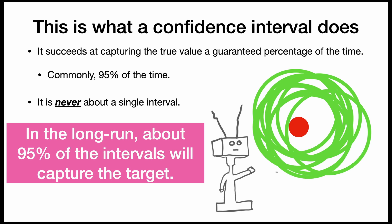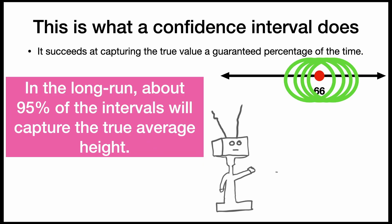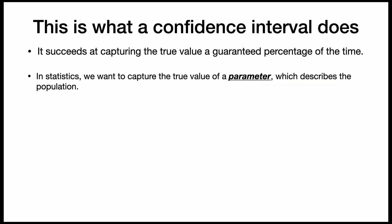In the long run, about 95% of the intervals will capture the target, and 5% will miss the target. In the long run, about 95% of the intervals will capture the true average height of 66 inches, and 5% will miss the target.